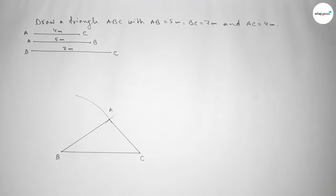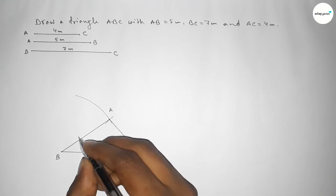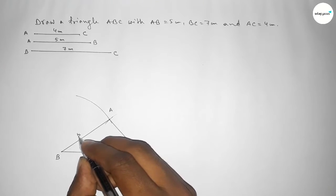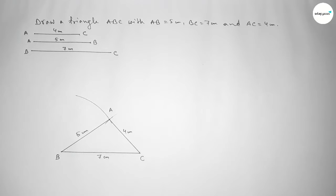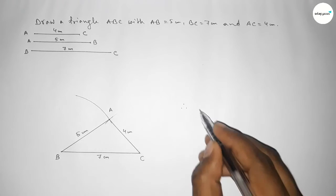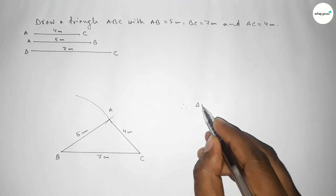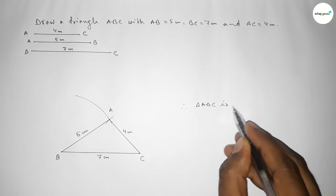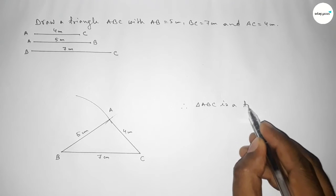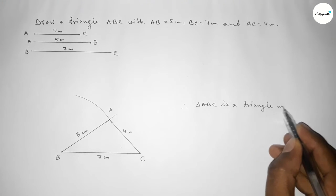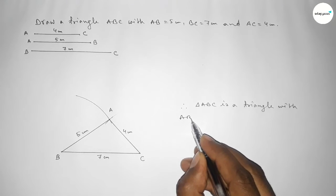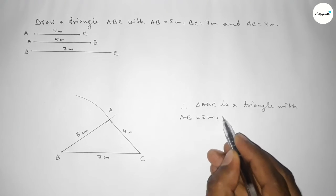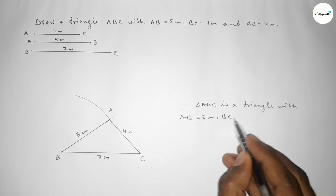So this side is 7 centimeter, this side is 5 centimeter, and this side is 4 centimeter. Therefore, triangle ABC is a triangle with AB equal to 5 centimeter, BC equal to 7 centimeter, and AC equal to 4 centimeter.